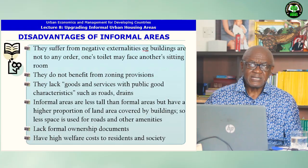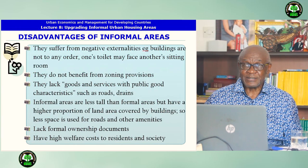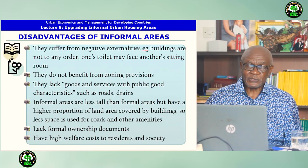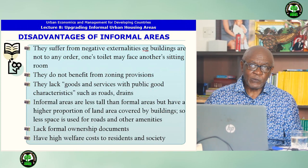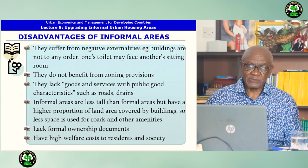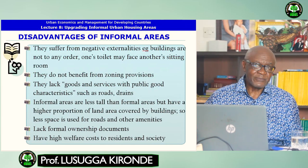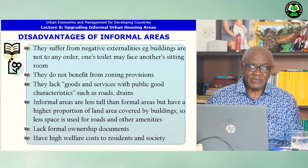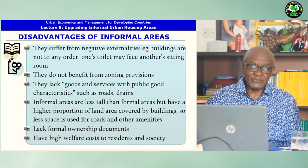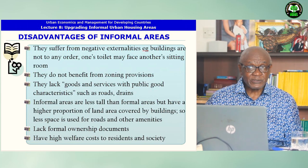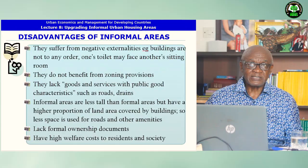However, there are many disadvantages of living in these areas. They suffer from negative externalities such that buildings are not in any order — one's toilet may face another's sitting room. They do not benefit from zoning provisions. They lack goods and services with public good characteristics such as roads and drains. Informal areas are less tall than formal areas, but have a higher proportion of land area covered by buildings, so less space is used for roads and other amenities. They lack formal ownership documents and have high welfare costs to residents and society in general.